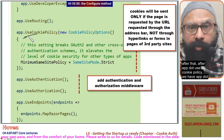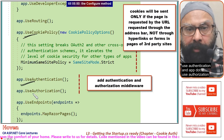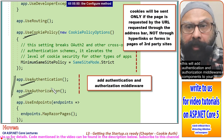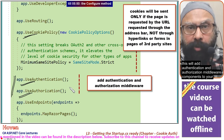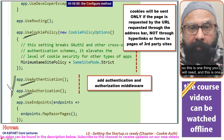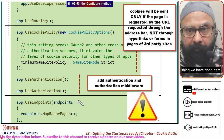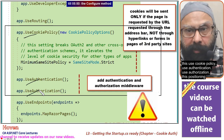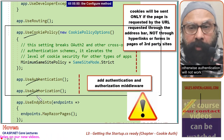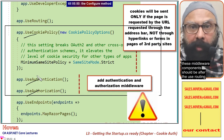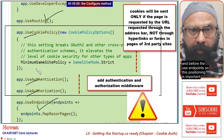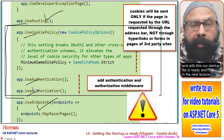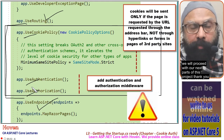After app.UseCookiePolicy(), we have app.UseAuthentication() and app.UseAuthorization(). These calls add authentication and authorization middleware components to your pipeline. The positioning is important — UseCookiePolicy, UseAuthentication, and UseAuthorization must come after UseRouting and before UseEndpoints, otherwise authentication will not work. These are the only settings we will need in this project. With this our startup file is ready, and in the next lecture we will proceed with the next parts of this project.